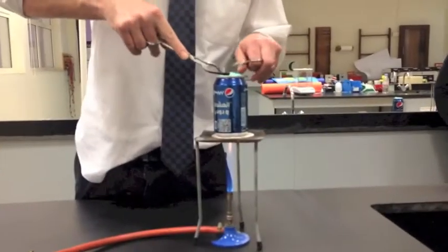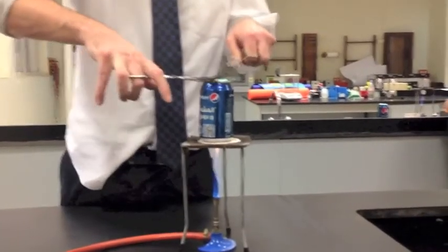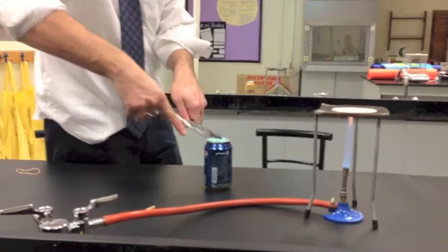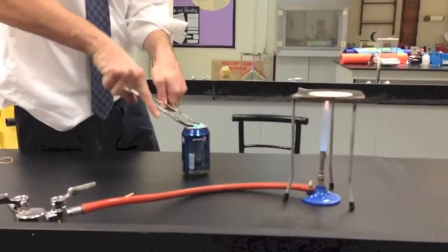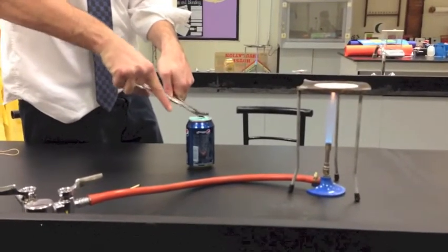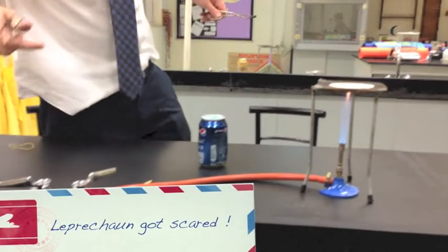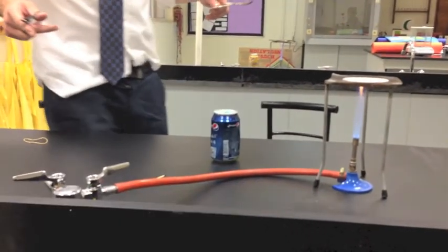When the water evaporates, it pushes out the air and replaces it with steam. Then, by putting the can in the water, you are sealing off the opening so no particles can enter the can. Water condenses on the side of the can and a vacuum is created. We will explain more on this later.